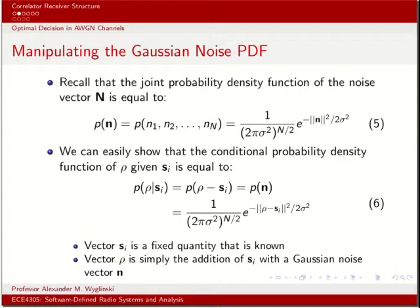We saw how the joint probability density function of the noise vector across n dimensions equals 1 over (2π σ²)^(n/2) times e to the minus magnitude-squared of n divided by 2σ² — where the magnitude squared is the squared length of the noise vector from the origin in vector space. Since the noise vector equals the received signal minus the transmitted signal, we substitute that in and replace the received signal with rho to get equation 6.